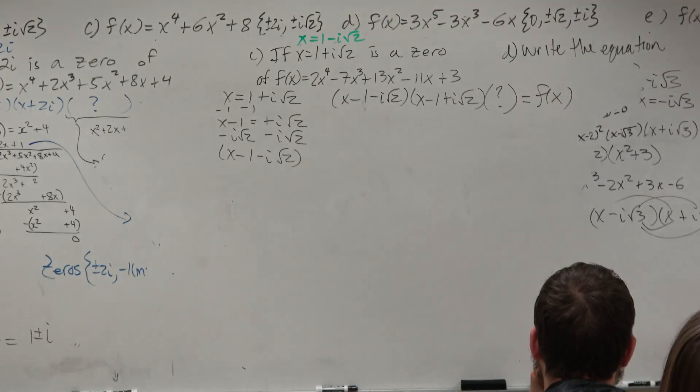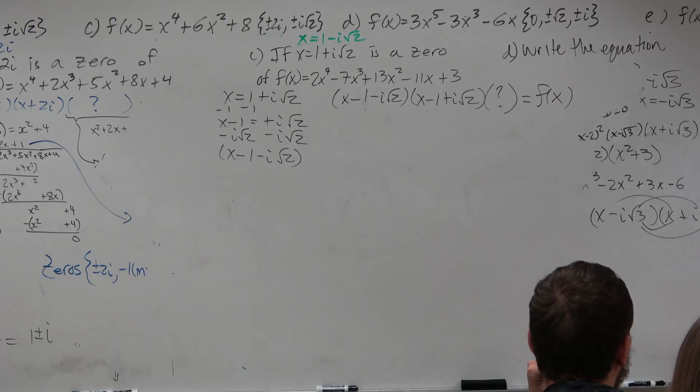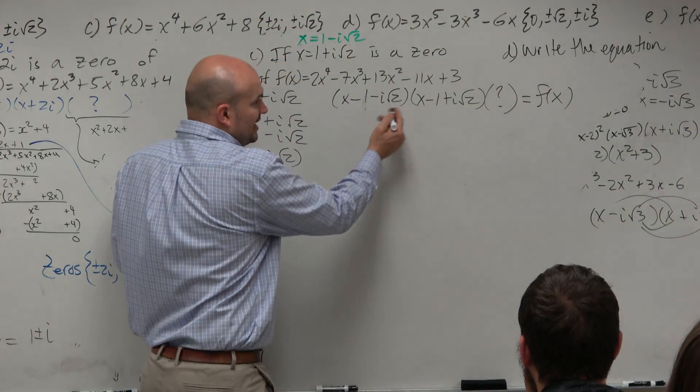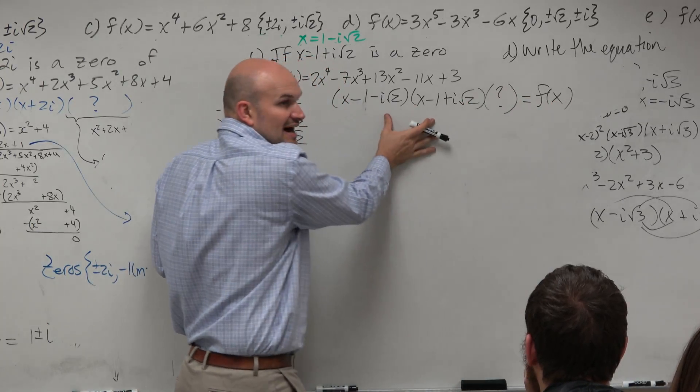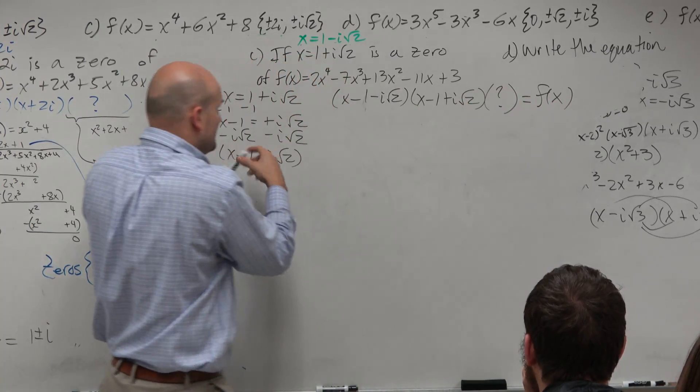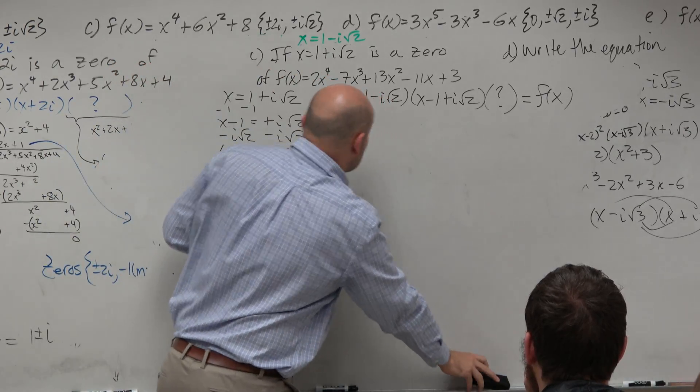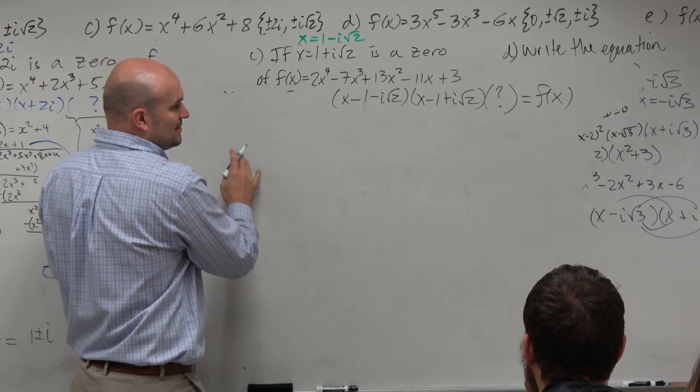So what we need to do then is figure out what is that something else. So what we can do here is if you guys think about this in division, if we could multiply these two and then take f of x and divide it by that product, the first thing we've got to do is we've got to multiply these. Now, I already showed you guys the box method. You guys could just set these up as a box method and multiply them out.